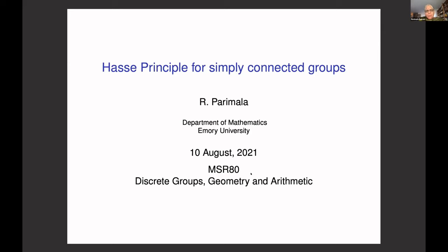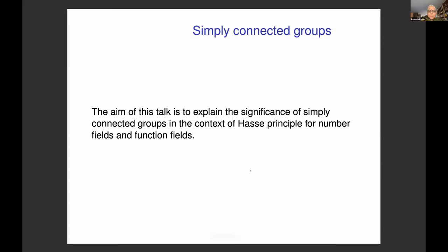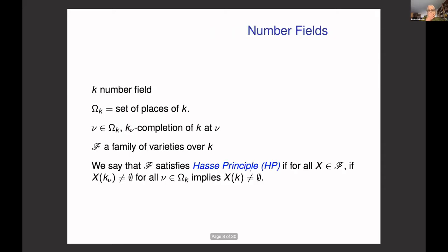The main theme of my talk is to highlight the significance of the role of simply connected groups in the context of the Hasse principle for number fields and later on function fields. So what is the Hasse principle? This has been mentioned already in several talks before. K is a number field, Ω_K the set of all places of K, and for a place v we denote by K_v the completion of K at v.